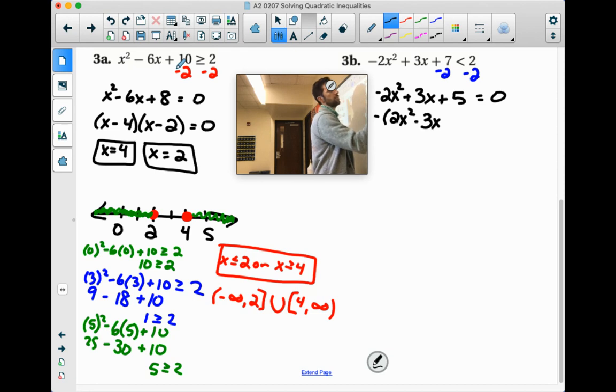Then minus 3x minus 5. First term, 2 times negative 5 is negative 10. So they have to be 3 apart. So it'd be like x minus 5 and x plus 2.